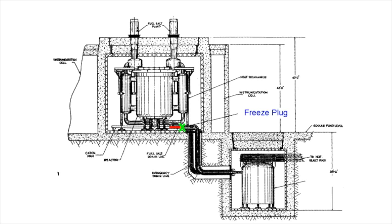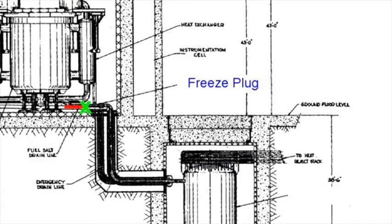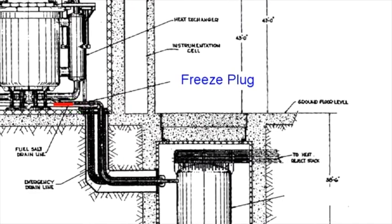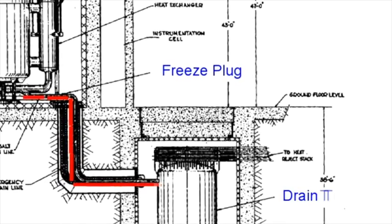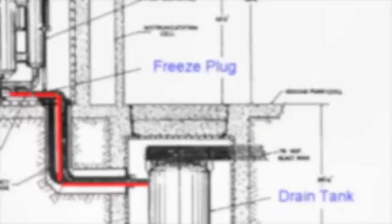If a molten salt reactor gets too hot for safe operation, the freeze plug, normally kept solid by a cooling fan, will melt. This allows the liquid fuel salts in the reactor to flow into the emergency dump tanks, where they cannot continue fission.